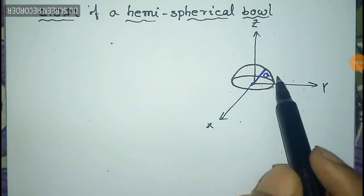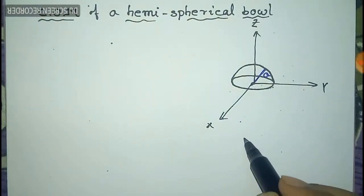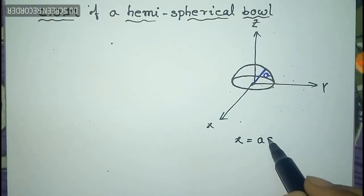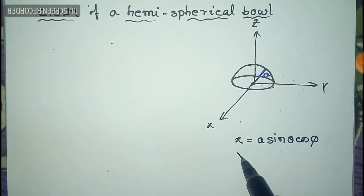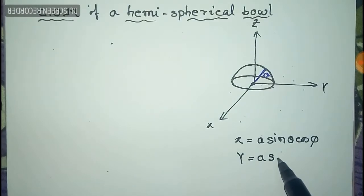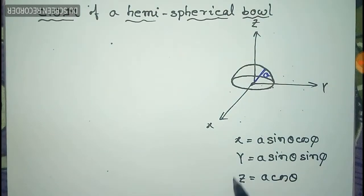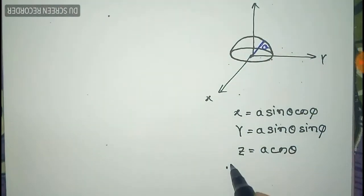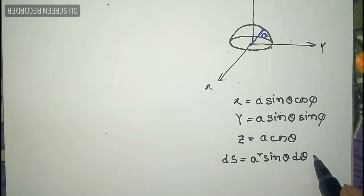We have to calculate the center of mass of the hemispherical bowl of radius A. From geometry we can write x equal to a sin θ cos φ, where θ and φ have their usual meaning, y equal to a sin θ sin φ, and z equal to a cos θ. If the total surface is S, then dS is equal to a² sin θ dθ dφ.